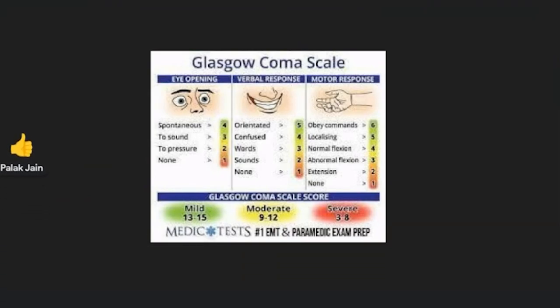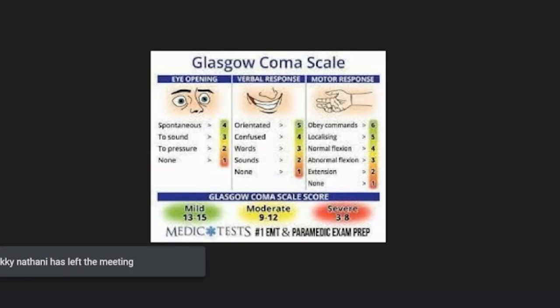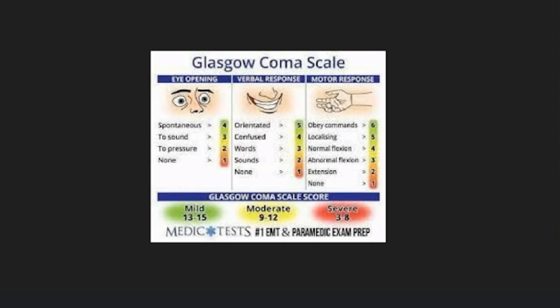What is the Glasgow Coma Scale and what is its main use? Put it in the chat box — any idea why GCS is used? Don't hesitate; it's okay if you're wrong. It's used for neurological examination, to check consciousness — but we don't use GCS for babies. It's used to check consciousness level, neurological assessment, and to check brain injury.